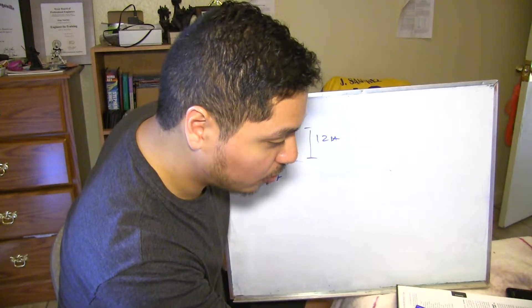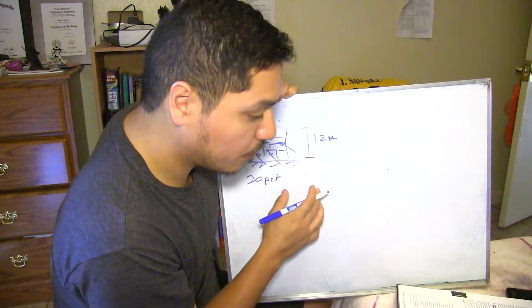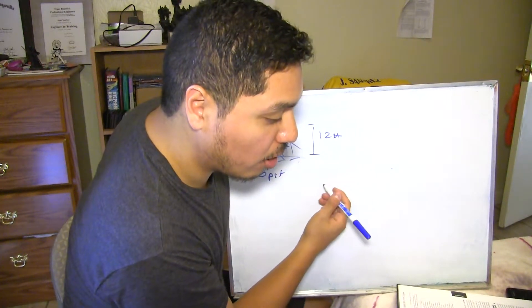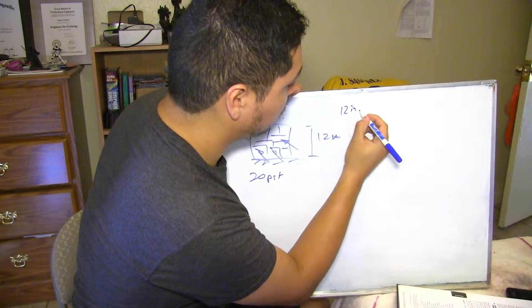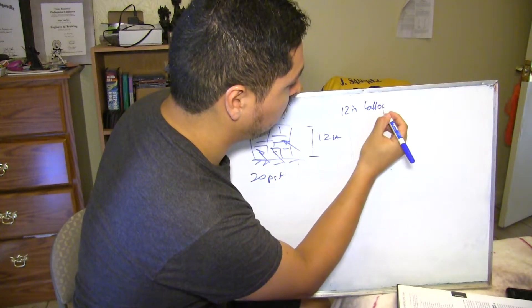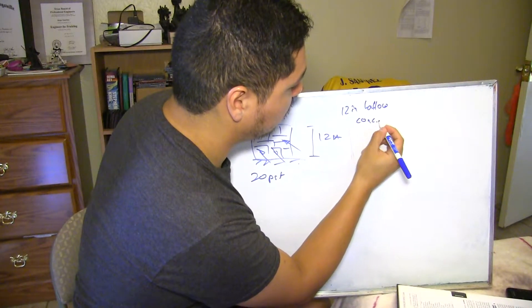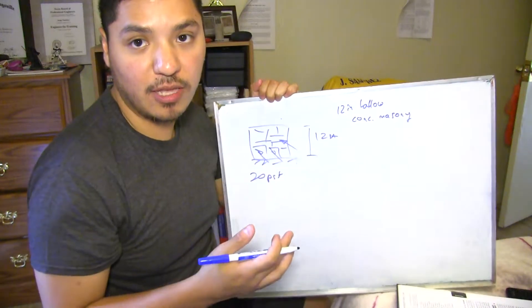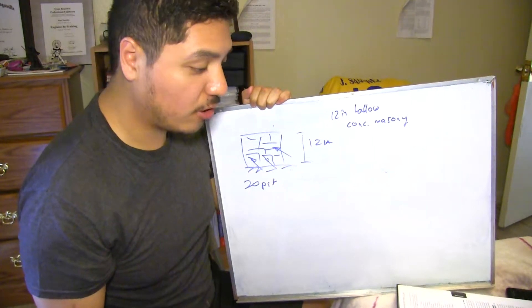It's a 12-inch hollow concrete masonry. So basically this will tell you what type of masonry, what type of values you're going to use.